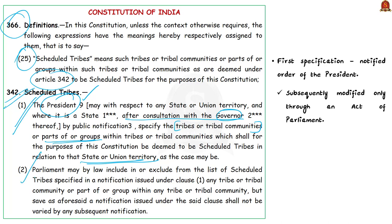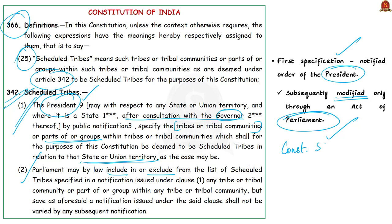According to Clause 2 of Article 342, Parliament may by law include or exclude from the list of scheduled tribes specified in the notification issued under Clause 1. So the first specification of scheduled tribes in relation to a state or union territory is done by a notified order of the President after consultation with the state governments. But these orders can be modified subsequently only through an Act of Parliament. In this regard, the President passed the Constitution Scheduled Tribes Order of 1950, under which scheduled tribes of many states were mentioned.